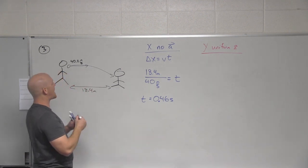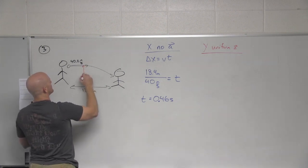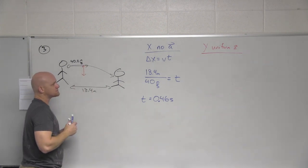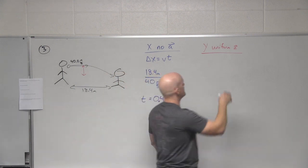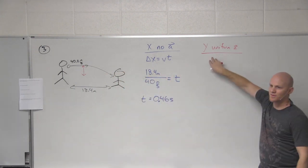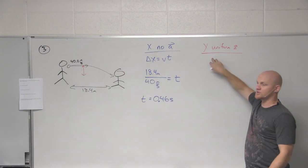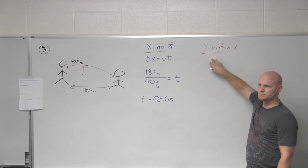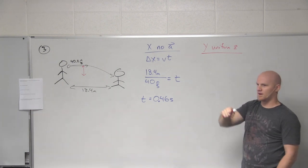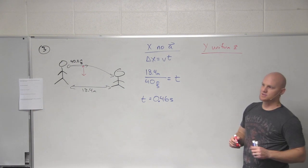So if I want to know how far this thing drops here in the vertical direction, I'm going to have to deal with our y motion. In this case, what are we trying to really solve for to find out how far things are dropping? What variable? Not the velocity. Displacement. We want the displacement.